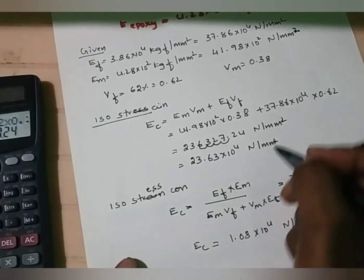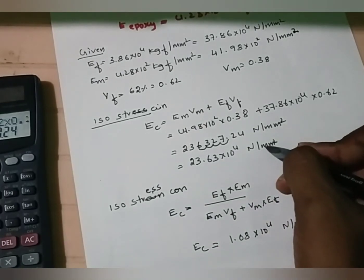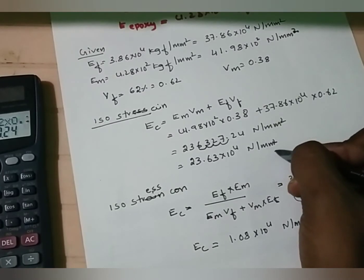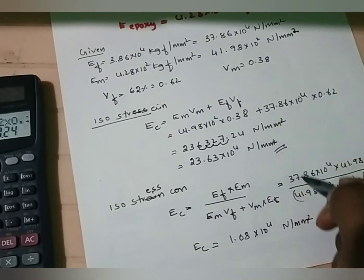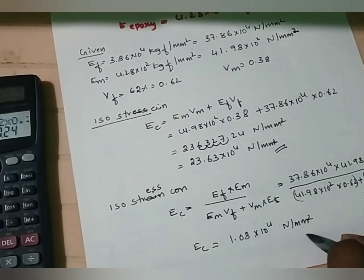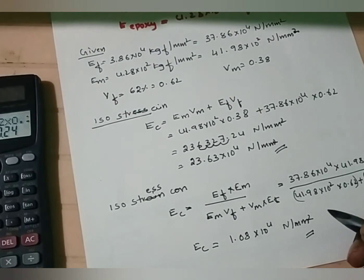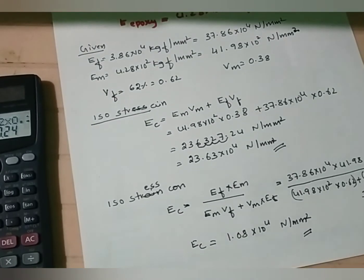This is the Young's modulus or modulus of elasticity under isostrain condition, and 1.08 × 10⁴ N/mm² is the Young's modulus or tensile modulus under isostress condition. Thank you.